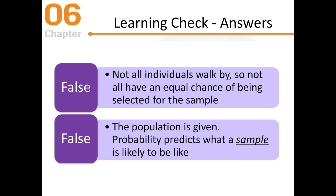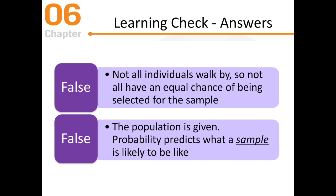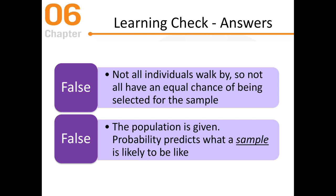The second statement is also false. Probability only predicts what kind of sample characteristics are likely to be. The population is already given — probability does not predict the population.